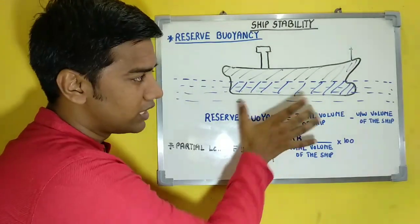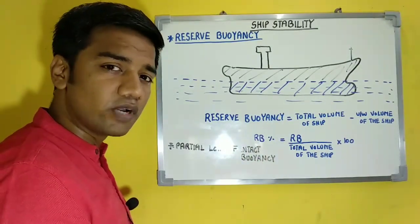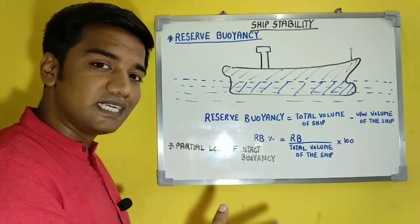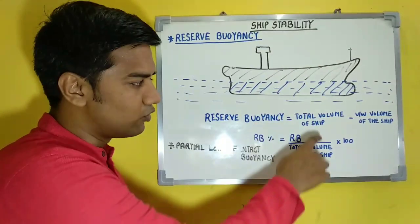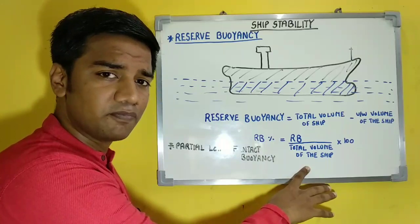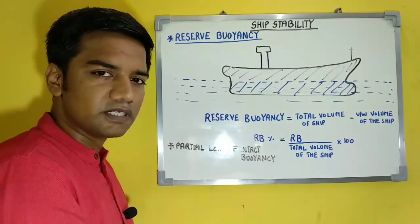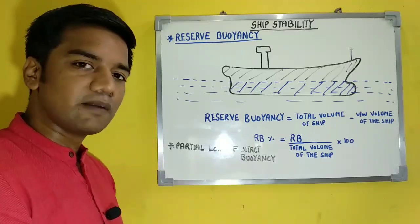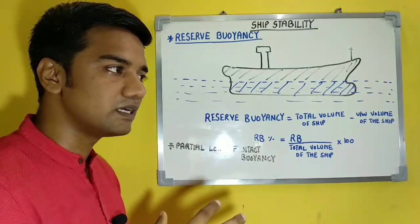How do we calculate reserve buoyancy? Reserve buoyancy is the total volume of the ship minus your underwater volume. If you want to calculate it in percentages, reserve buoyancy percentage is the above water volume divided by the total volume of the ship, multiplied by 100 — basically the standard way we calculate percentages.